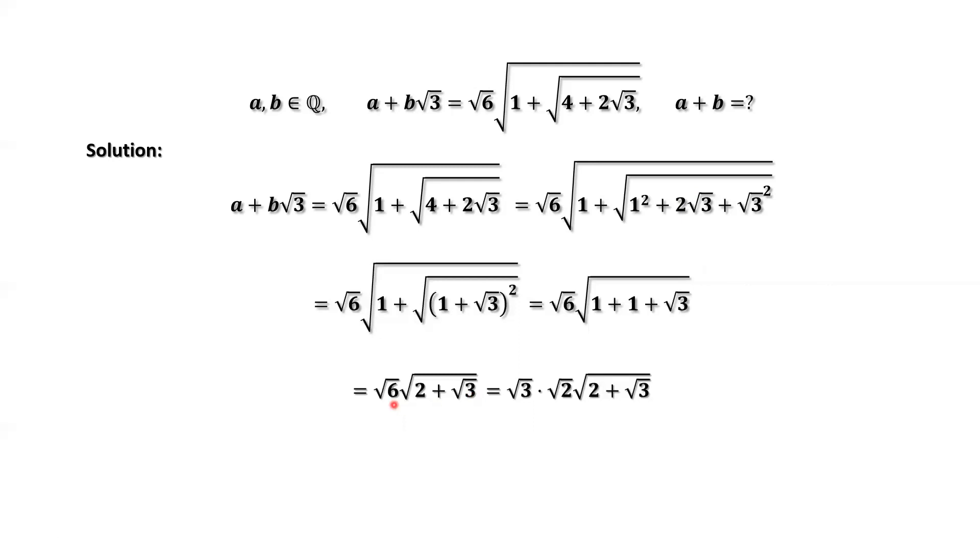We rewrite √6 as √3 times √2. We want to merge √2 and √(2 + √3) together.